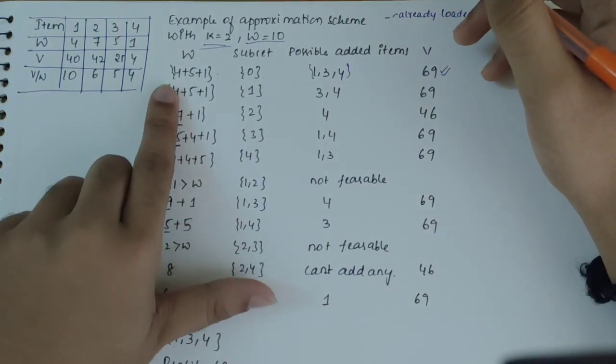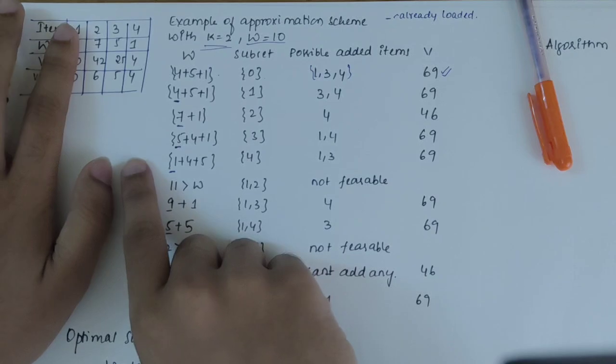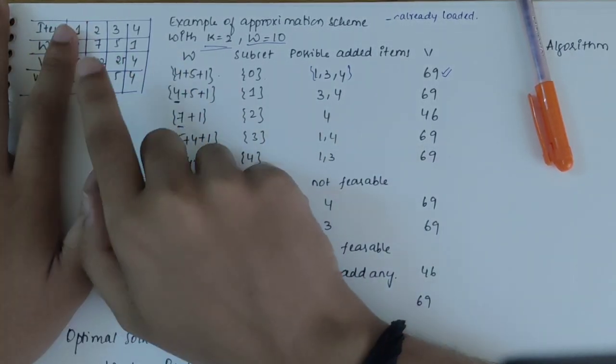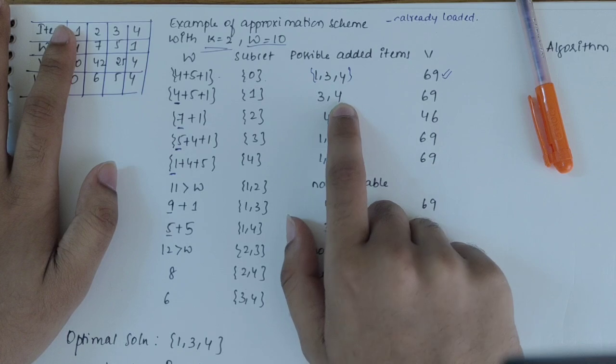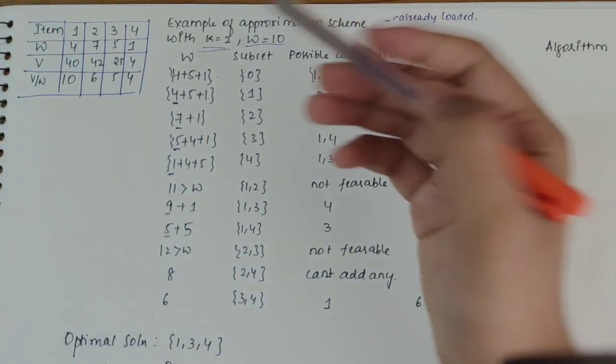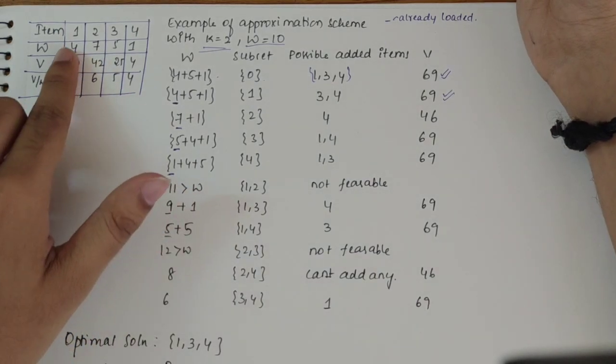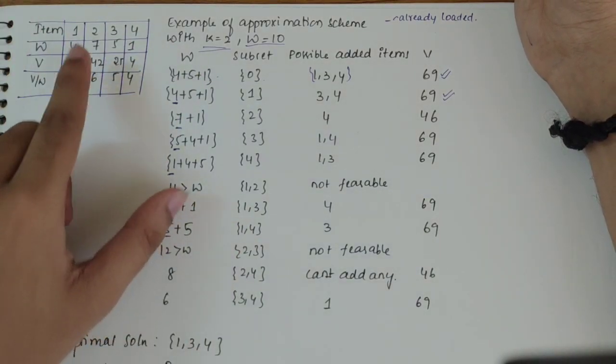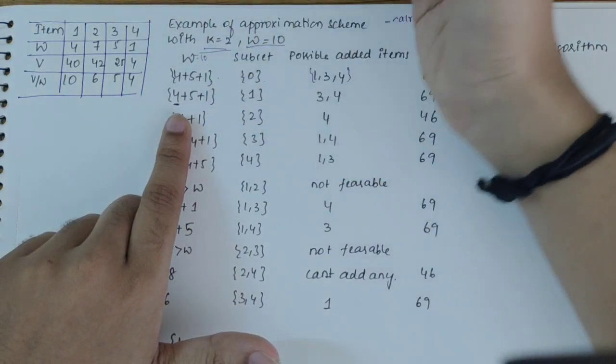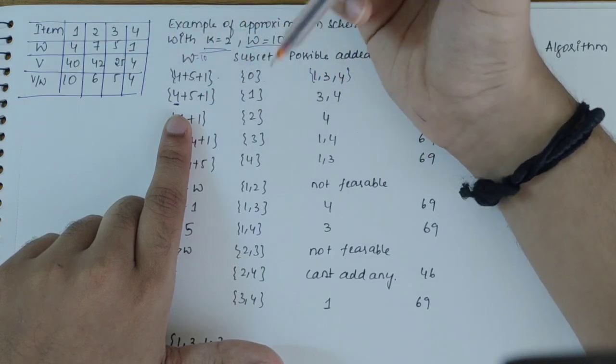For the first subset that is 0, I will take weight of 4, 5, 1. That is 40 plus 25 plus 4. If I take 4 plus 5 plus 1 weights, the possible added items here would be items 1, 3 and 4, and the value is 69. Then if I retain 4 as it is and check if other values can be added - if I take items 3 and 4, I will get 69 again because weights are 5 and 1.